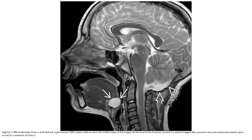MRI incidentally showed a well-defined, hyperintense thyroglossal duct cyst in the midline base of the tongue. This was in a patient imaged for evaluation of the posterior fossa, performed for treatment planning of a cerebellar hemangioma.